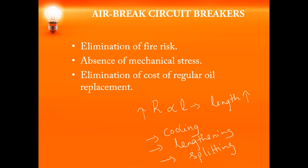By lengthening the arc, by splitting the arc, or by cooling the contact area we can obtain high resistance. These are the methods used to quench the arc in air break circuit breakers. The arc resistance is increased to such an extent that the voltage drop across the arc becomes more than the system voltage, and the arc quenches at the current zero of the AC wave. Air break circuit breakers are usually used in DC circuits and AC circuits up to 12 kV.